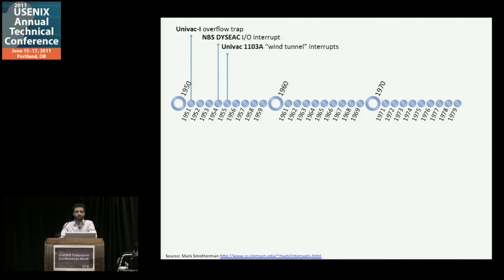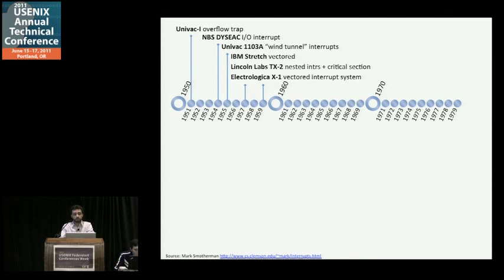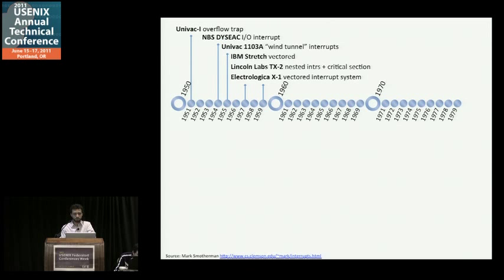Fast forward to 1955, the UNIVAC 1103-A had wind tunnel interrupts — they actually connected them for real-time data collection with wind tunnels. In 1957 to 1959, independently in the U.S. and in Amsterdam, people were working on interrupts: the IBM Stretch machine, Lincoln Labs TX-2, which had interesting instruction set architecture support built in for interrupts and critical sections, and the X1, which had a really nice vector interrupt system — the same design pattern we find today. By 1960, pretty much every computer being built had interrupt support, with deliberate exceptions for experimental designs or simplicity of polling like a couple of the Cray machines.